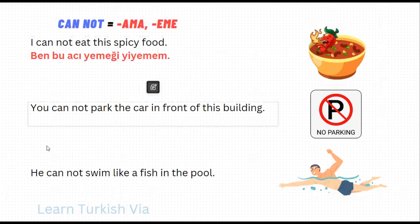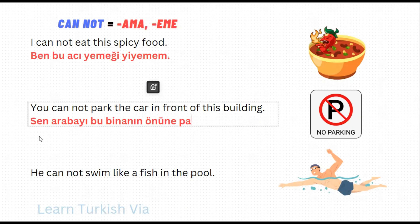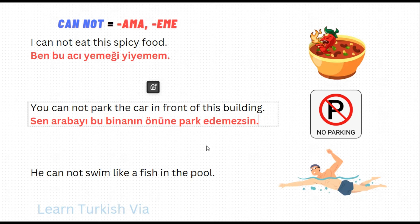In the next sentence, 'you cannot park the car in front of this building.' The car – araba, it's a particular one, so arabayı. This building – bu bina, in front of this building – bu binanın önüne. Park – park et, with the auxiliary verb. Cannot – park et-e-me, the t becomes d: park edemez, negative suffix -z, you cannot park – edemezsin. So: 'Sen arabayı bu binanın önüne park edemezsin.'